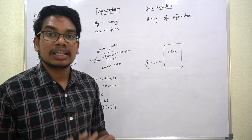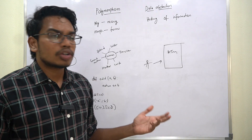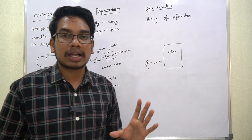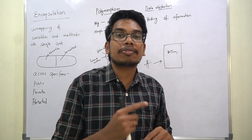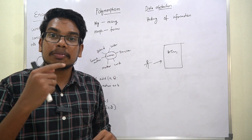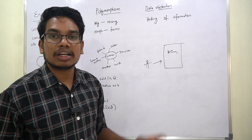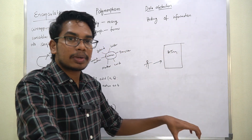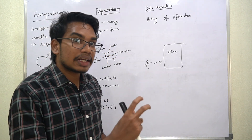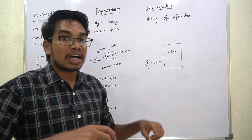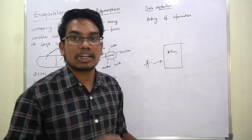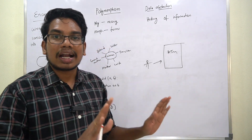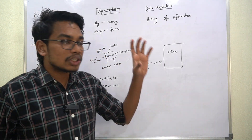What is happening internally? Money processing, everything is working internally — that is the hiding of information. What we call the hiding of implementation is called data abstraction. For example, if you ride a cycle, you speed up, you brake, you slow the tire — you use the functionality without knowing the internal workings.